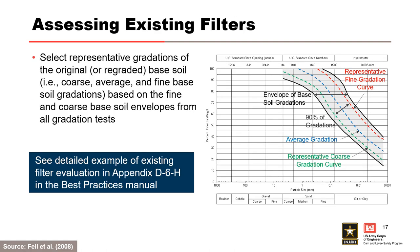When assessing existing filters, Fell et al. 2008 recommends selecting representative gradations of the original or re-graded base soil, which are indicative of the finer 5% of the base soil gradations, the average gradation, and the coarser 5% of the base soil gradations. In this scenario, the representative base soil gradation represents 90% of all gradation tests.